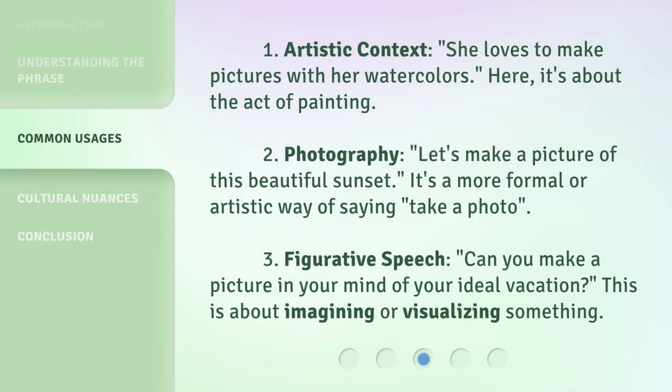1. Artistic context: She loves to make pictures with her watercolors. Here, it's about the act of painting. 2. Photography: Let's make a picture of this beautiful sunset. It's a more formal or artistic way of saying take a photo. 3. Figurative speech: Can you make a picture in your mind of your ideal vacation? This is about imagining or visualizing something.